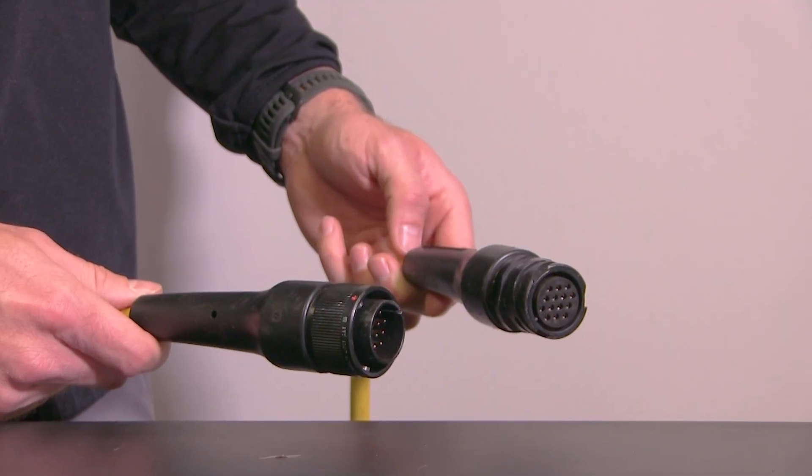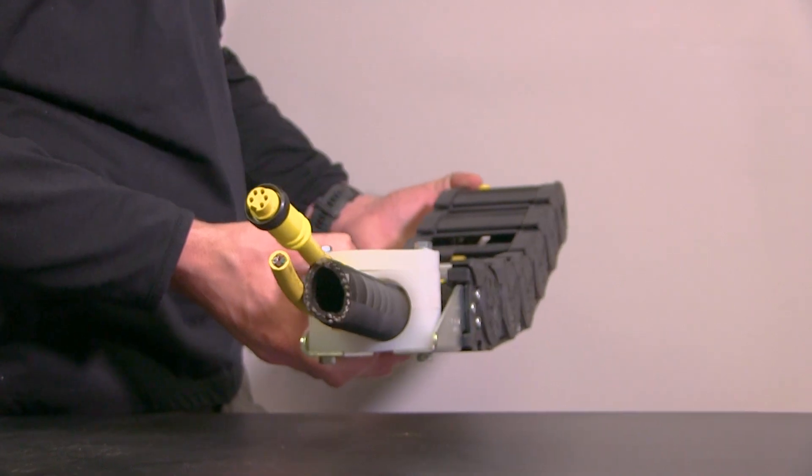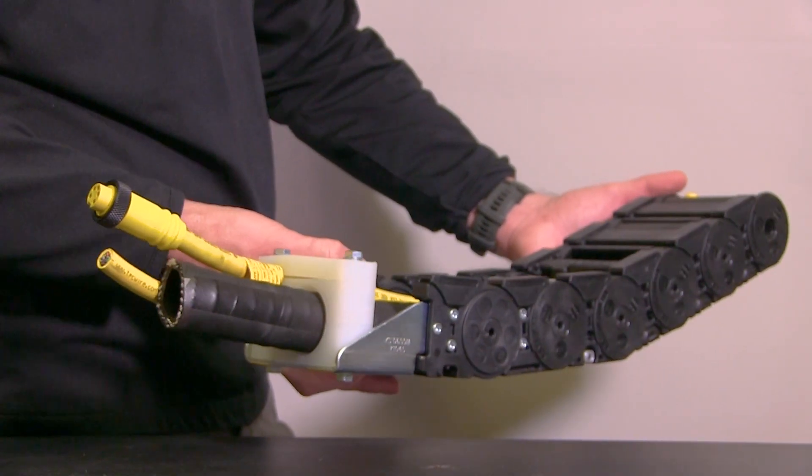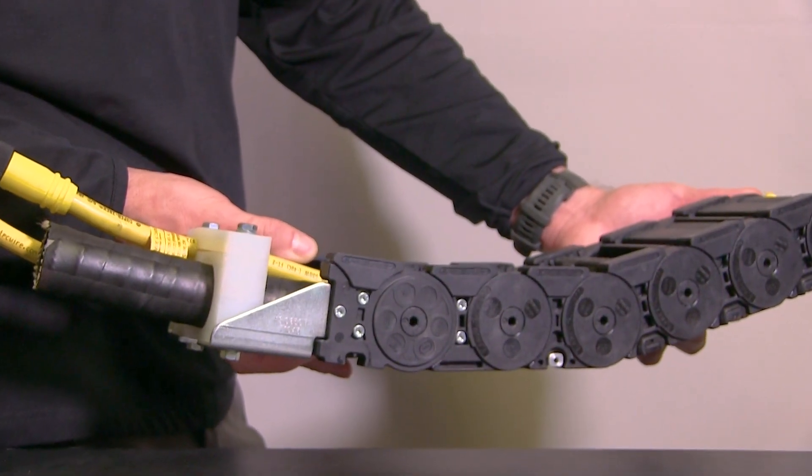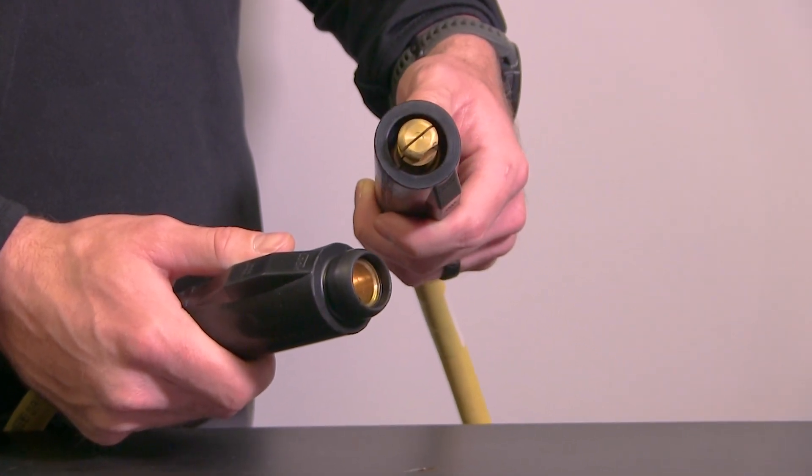These custom assemblies include overmolded power and encoder cables, drop-in cable carrier replacements with cables, connectors, and hoses pre-terminated and loaded, and overmolded temporary power or welding connectors that require high capacity.